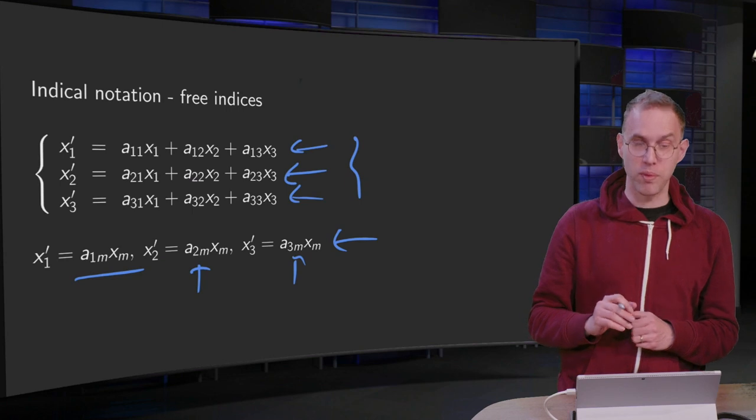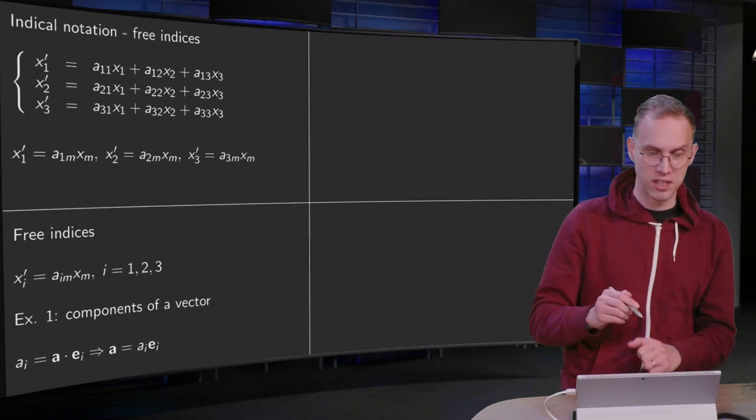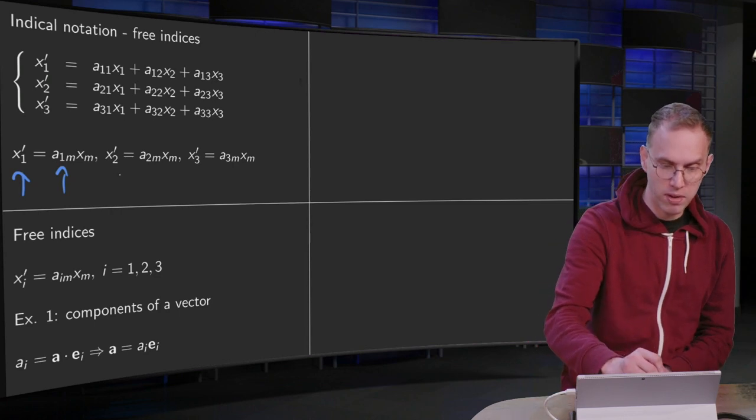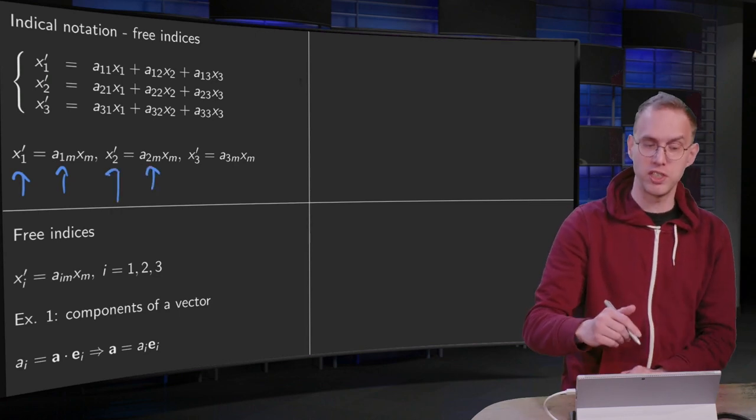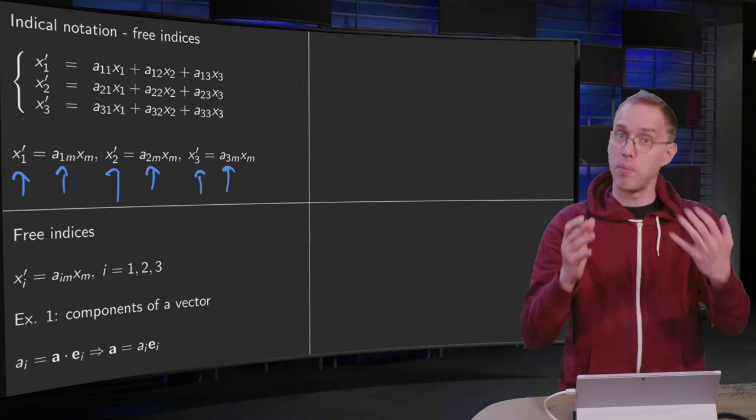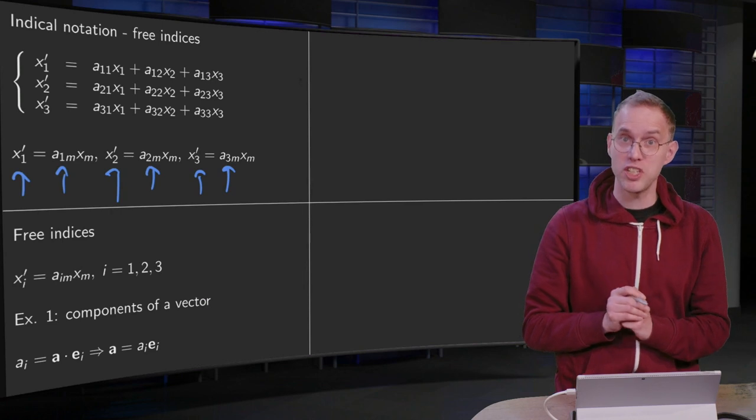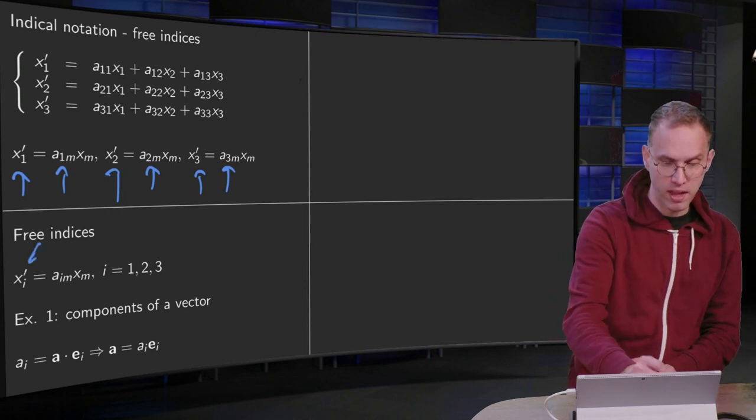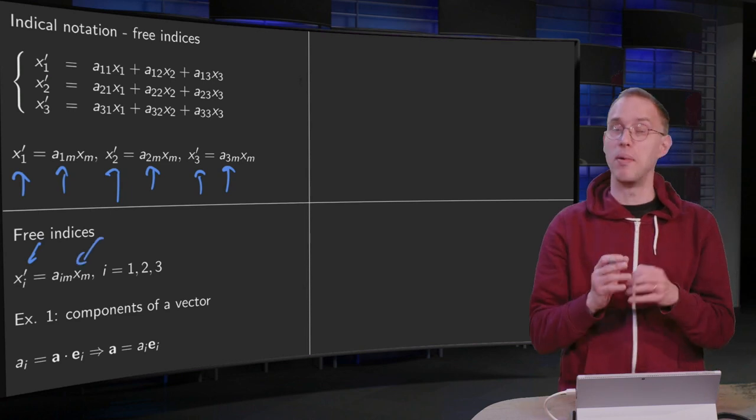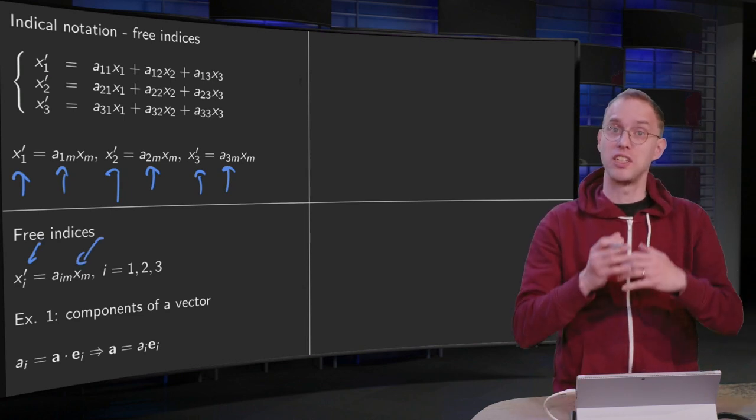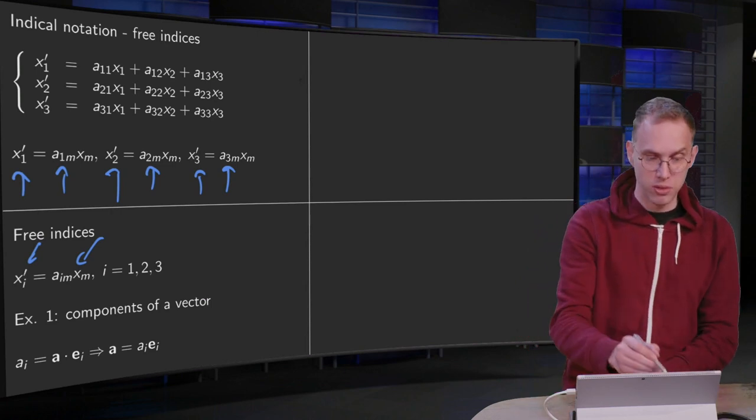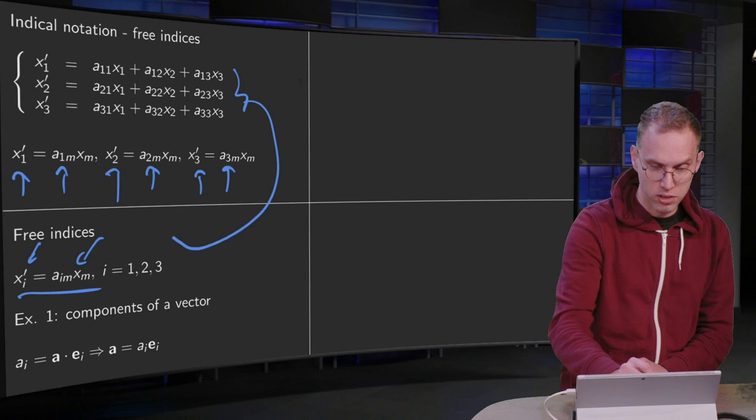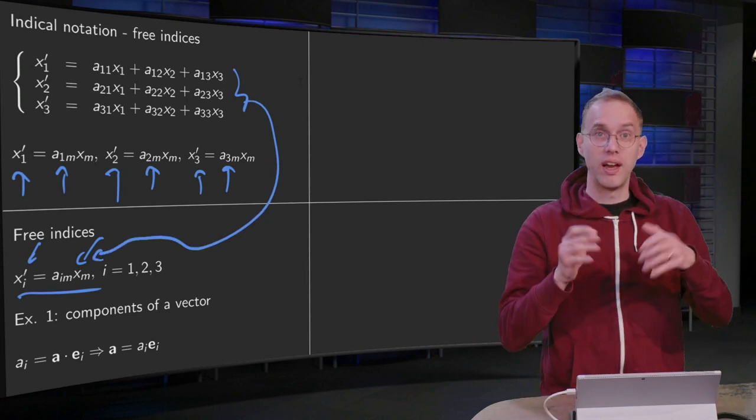And you can do even better using free indices. Because as you see, you have a one here and a one here, and apart from that they are the same. You have a two here and a two here—apart from that the expressions are the same. And you have three here and a three there, and apart from that the expressions are the same. So you can shorten this by using a so-called free index and use an i there: write xi prime equals aim xm, where your index i is free and can take the values one, two, and three.